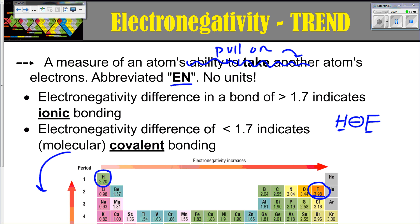Whereas hydrogen doesn't have as much Z-effective nuclear charge, so it's willing to let fluorine pull those electrons a little further away. The same is going to be true for any of these non-metals: non-metals will generally have a higher electronegativity value because they have a higher Z-effective nuclear charge and therefore want to pull those electrons closer. When they're bonded with metals from the other side, which have a low Z-effective nuclear charge, the non-metals are going to have a higher pull.